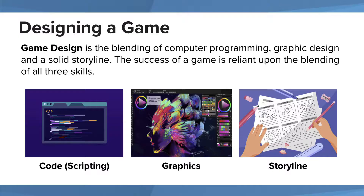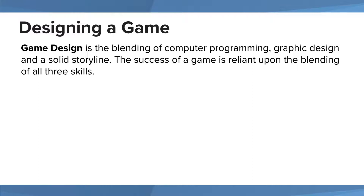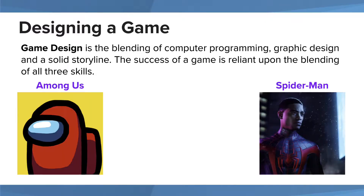While code is either non-existing or kept to a minimum in the design process, designers can benefit tremendously from learning how to do so in order to have a holistic understanding of the game they are creating. For example, let's take a look at the following games called Among Us and Spider-Man. At first glance, the two games couldn't be more different. The graphics of Among Us are clean and make use of primary and secondary colors, while Spider-Man Miles Morales provides extensive detail and depth.